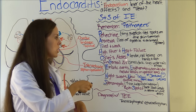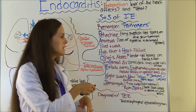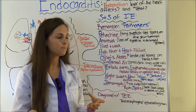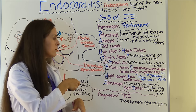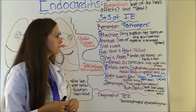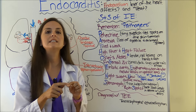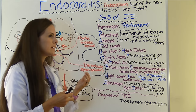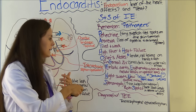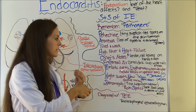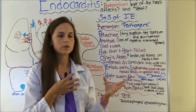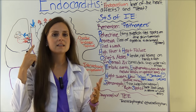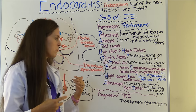O is for Osler's nodes — tender red lesions that you can find on the hands or the feet. G stands for fingernail changes — on the nail beds you'll see small dark lines that look like wood splinters; again, this is from emboli. E is for embolic event — the patient can throw emboli to the spleen, to the kidneys, the central nervous system, the lungs, from where the vegetation is breaking off.